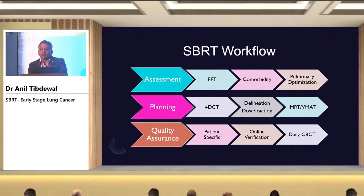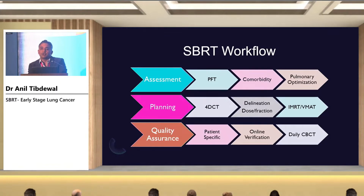How do you do SBRT treatment planning? First, assess the patient with clinical and physical examination. Pulmonary function tests should be considered. For comorbidities, refer the patient to a pulmonologist for pulmonary optimization if PFTs are poor. We need to do a 4D CT scan, which is a type of motion management technique, followed by delineation, dose fractionation, and radiation technique selection such as IMRT or VMAT. Most importantly, quality assurance and patient-specific QA checks before SBRT delivery, plus online verification with daily CBCT.